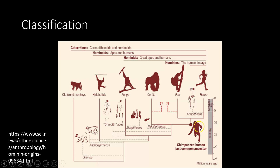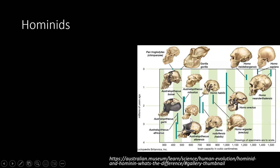A common misconception is that we've descended from chimpanzees, which we haven't. We are descended from a common ancestor with chimpanzees. So chimpanzees are only as new as we are — we split from a common ancestor somewhere between 10 and 7 million years ago.